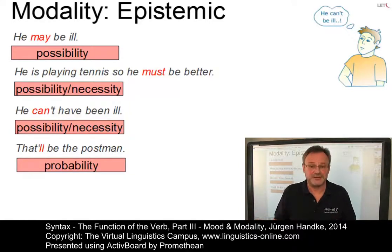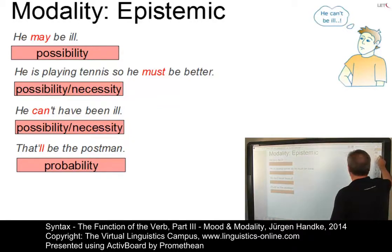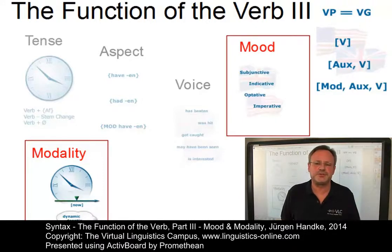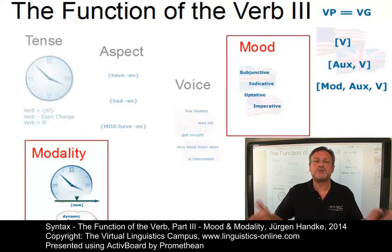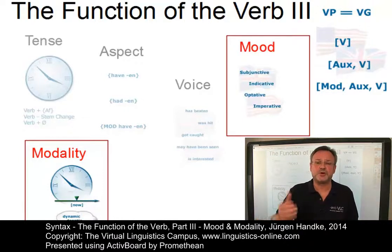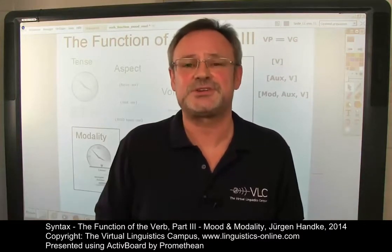So much for modality. In this e-lecture, we discussed two additional functions of the verb: mood and modality. Mood is realized by a particular verb form. Modality is realized syntactically in present-day English by means of a complex verb group with a modal verb, though alternative options such as adverbs, adjectives, nouns, and verbs are also possible. This is the final e-lecture in the series on the central functional aspects of the verb. Thank you very much for your attention.